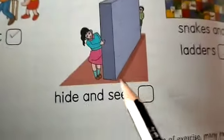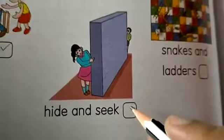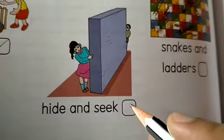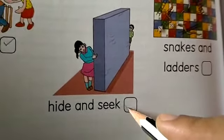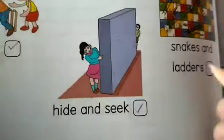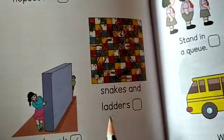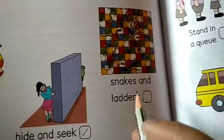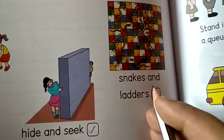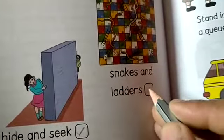Next, hide and seek. If you like to play hide and seek, then you have to put a right mark. Last one: snakes and ladders. If you like to play snakes and ladders, then you have to put a right mark.